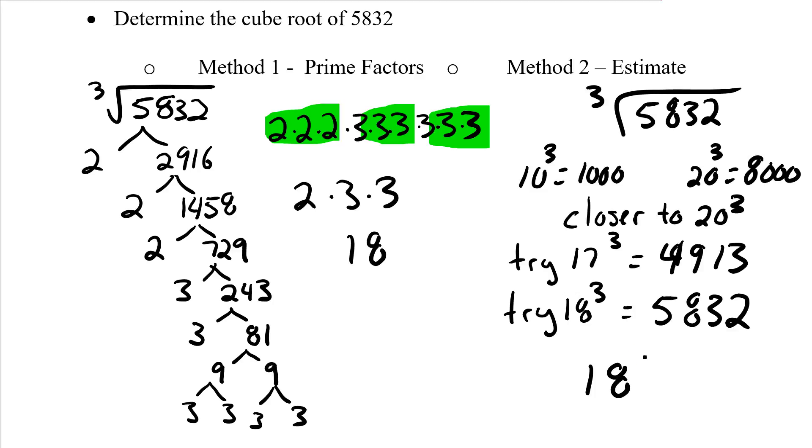Again, same two ways, whether it's squaring, or cubing, or the power of 4, power of 5, same idea. Prime factors, get into groups of 2s, 3s, or 4s, or 5s, whatever you need, get your answer. Estimating, find those tens, which ones are closer to, guess and check.